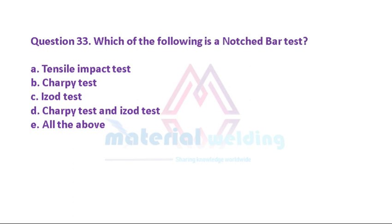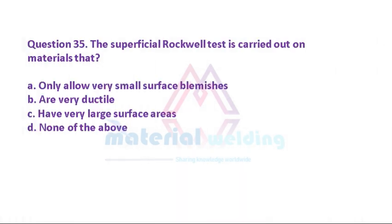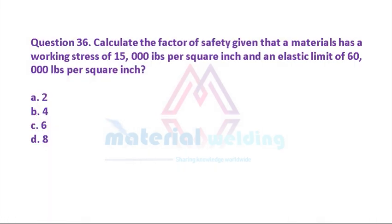Question 33: Which of the following is a notch bar test? A. Tensile impact test. B. Charpy test. C. Izod test. D. Charpy test and Izod test. E. All the above. Question 34: Hardness tests can be used to determine material: A. Hardness. B. Composition. C. Heat treated condition. D. All the above. Question 35: The superficial Rockwell test is carried out on materials that: A. Only allow very small surface blemishes. B. Are very ductile. C. Have very large surface areas. D. None of the above. Question 36: Calculate the factor of safety given that a material has a working stress of 15,000 PSI and an elastic limit of 60,000 PSI: A. 2. B. 4. C. 6. D. 8.